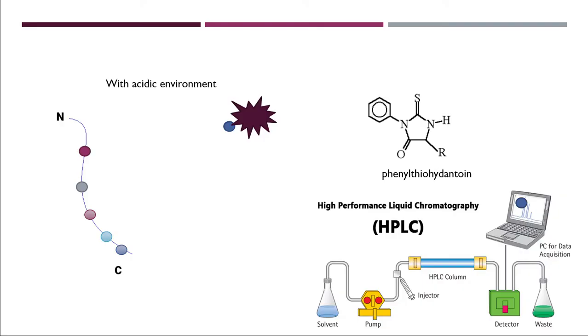So Edman reagent will take the amino acid one by one from the N-terminal and then we will detect it with HPLC.